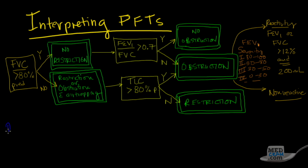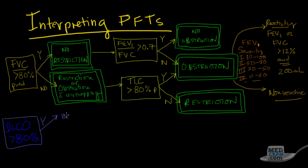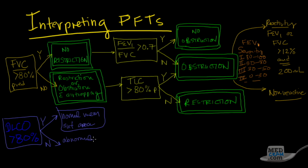The other thing to look at is the DLCO and whether or not it is greater than 80% of predicted. If the DLCO is greater than 80% of predicted, you have normal membrane surface area. If it is less than 80% of predicted, then the membrane surface area is abnormal.